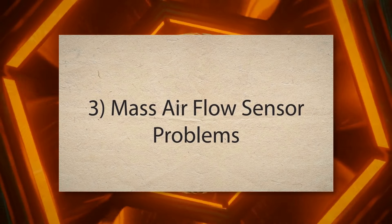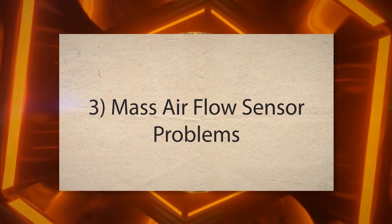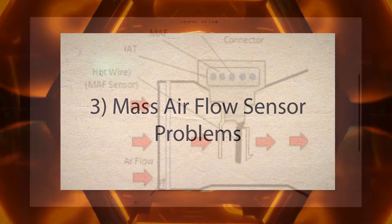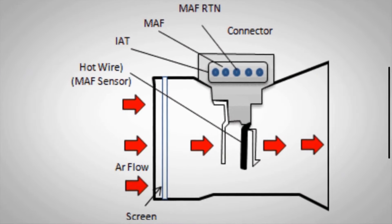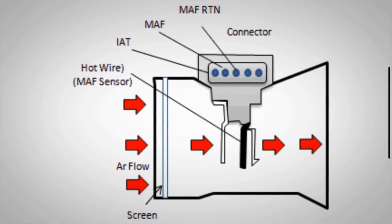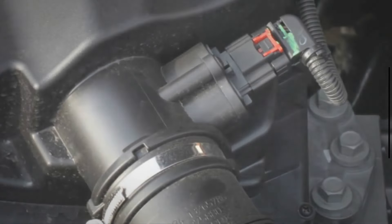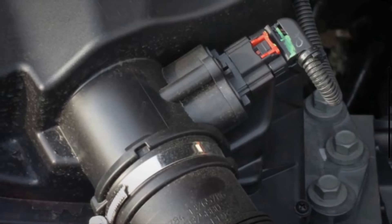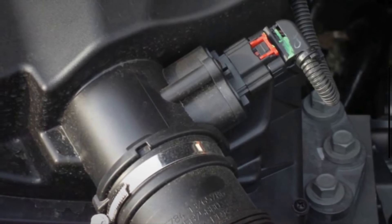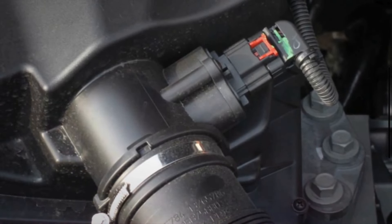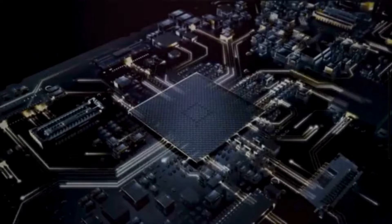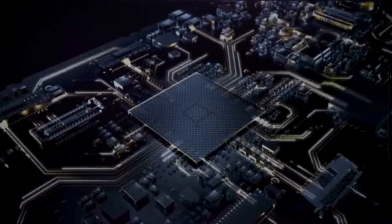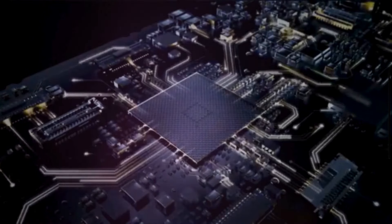3. Mass Air Flow Sensor Problems. The MAF sensor measures the amount of air entering the engine and helps determine the correct air-fuel mixture. A dirty or faulty MAF sensor sends incorrect readings to the ECU, causing improper fuel adjustments and unstable idling.